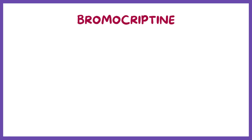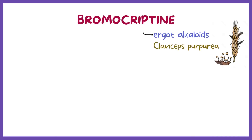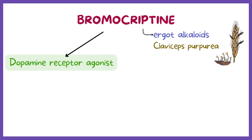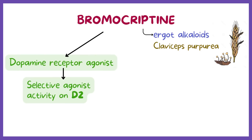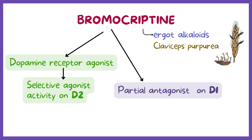Bromocriptine belongs to the group of medicines known as ergot alkaloids, produced by the fungus Claviceps purpurea. Bromocriptine is a dopamine receptor agonist with selective agonist activity on D2 dopamine receptors, while simultaneously acting as a partial antagonist for D1 dopamine receptors.